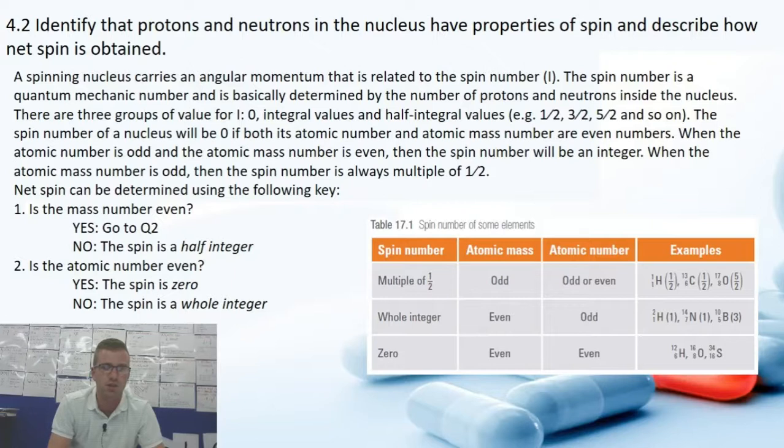Now going to question two because the mass number was even: Is the atomic number even? Yes, then the spin number is zero. And if no, then the spin is a whole integer.